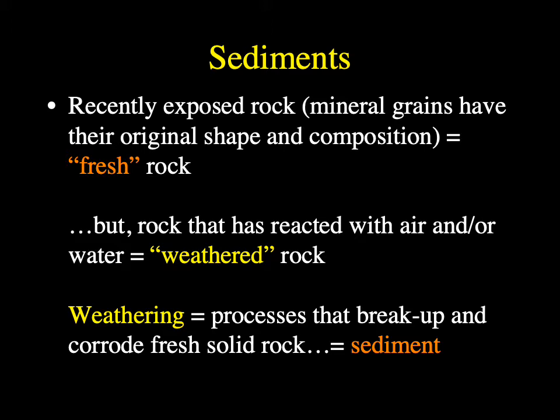Recently exposed rock is what we call fresh rock. A good example would be when you go down Highway 321 through Blowing Rock heading toward Hickory and Lenoir, and they've just blasted a section with dynamite. That's recently exposed rock — the mineral grains have their original shape and composition, and they have not had significant time to react with natural elements like oxygen in the air or water in the atmosphere.